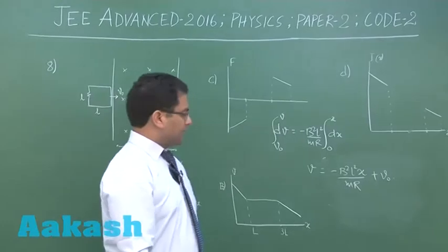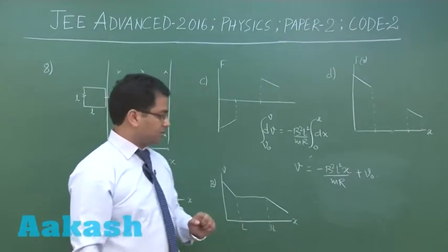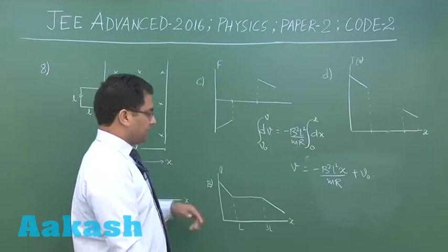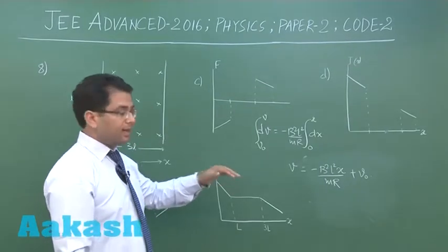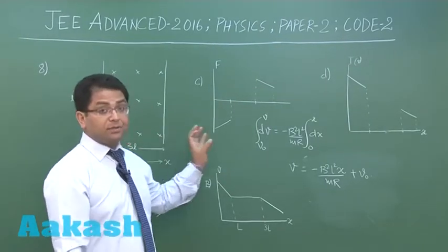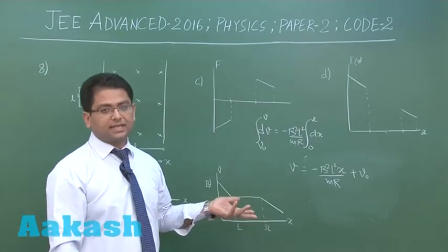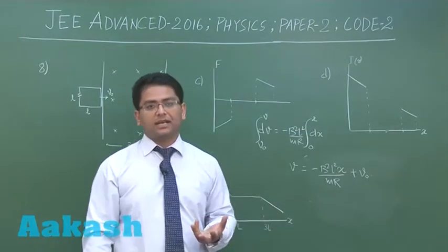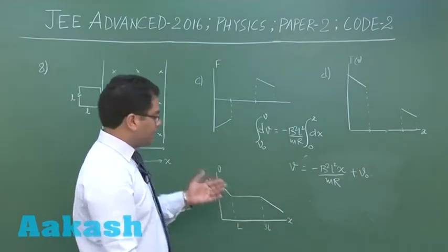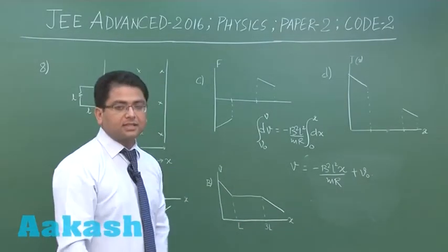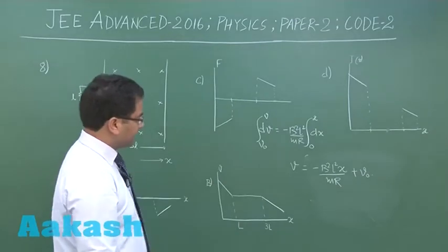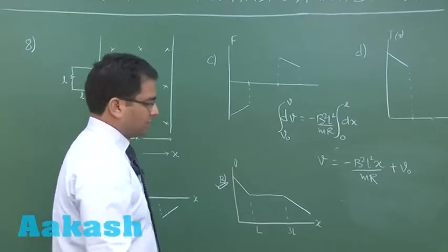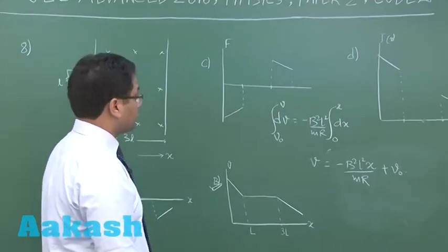The velocity varies linearly — a −MX + C pattern. During the entering phase the velocity decreases. When the loop is well inside, there is no induction because the flux is constant, so the velocity would be constant — no induction means no current, no retardation. Again during the exiting phase the velocity decreases in the same way. So option B is the correct option for velocity.